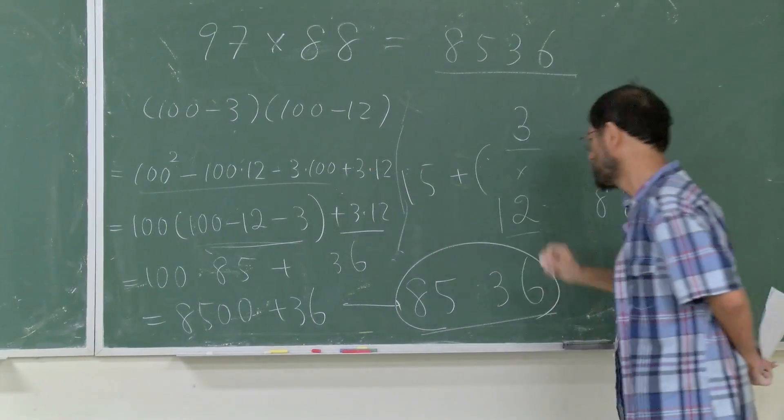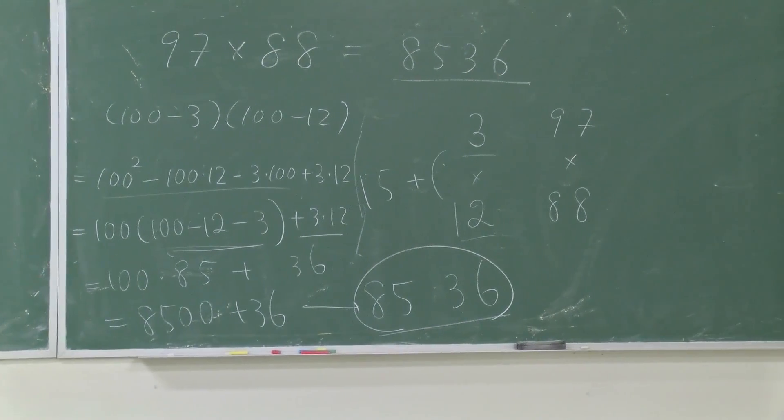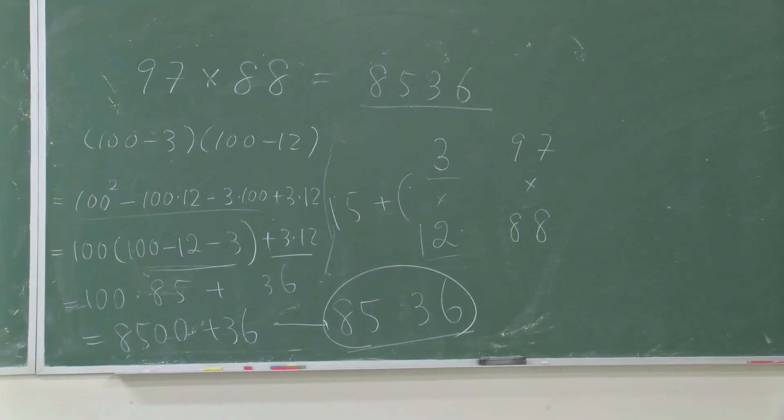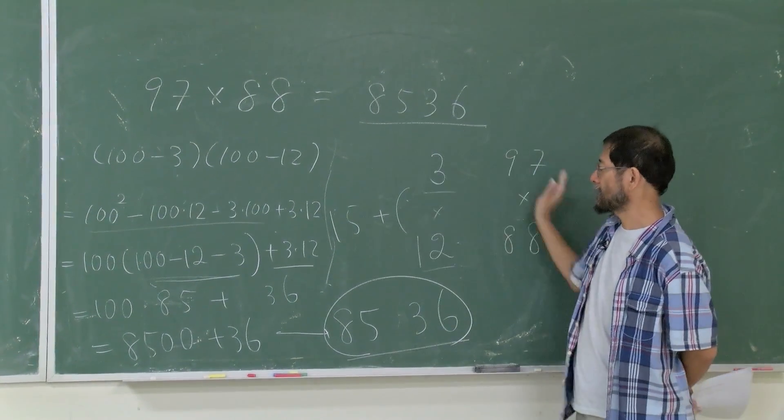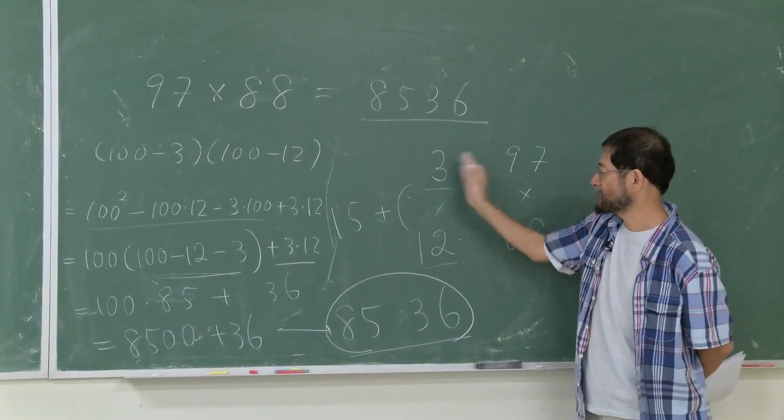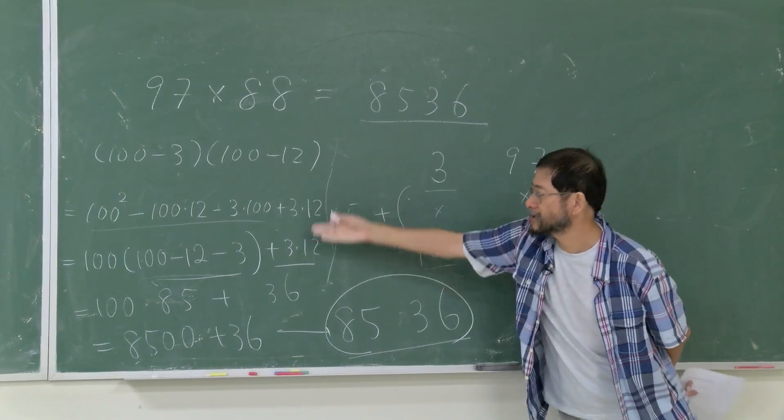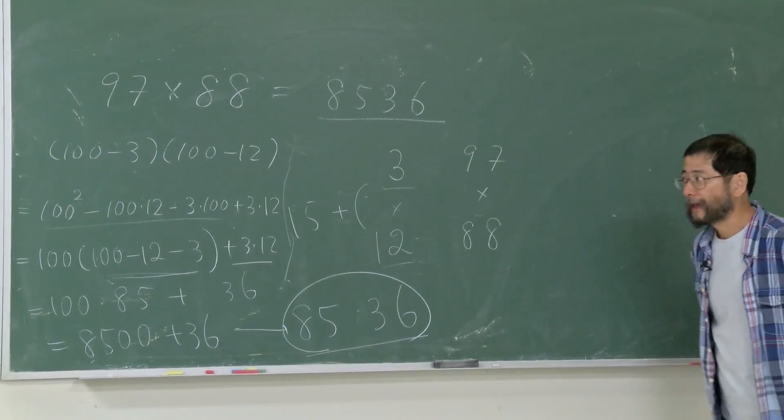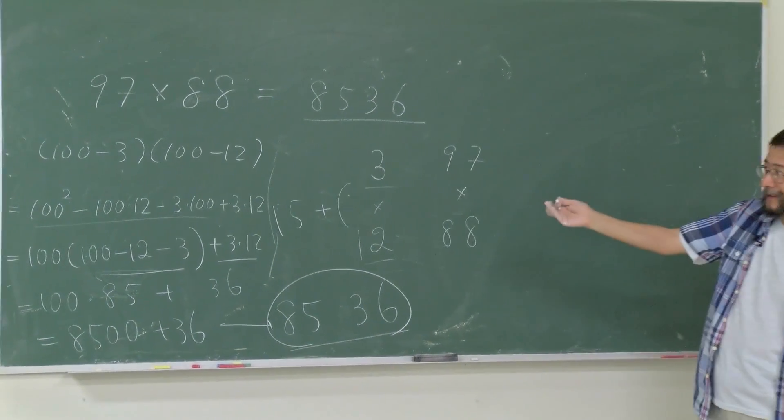That's exactly 8500 and 36. So that's why behind this computation, I just wrote it this way, but what's really going on is FOIL.